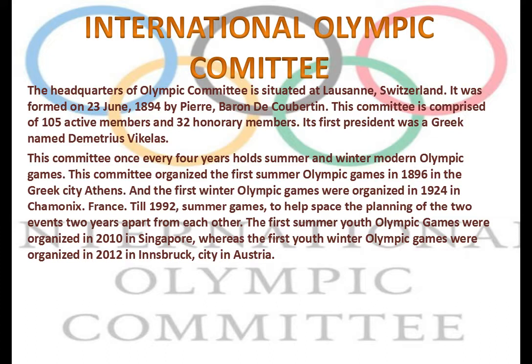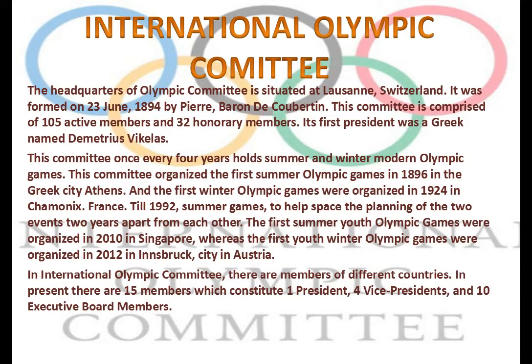Until 1992, summer and winter games were held in the same year. Since then, the planning of the two events was staggered two years apart from each other. The first summer Youth Olympic Games were organized in 2010 in Singapore, whereas the first Youth Winter Olympic Games were organized in 2012 in Innsbruck, Austria.